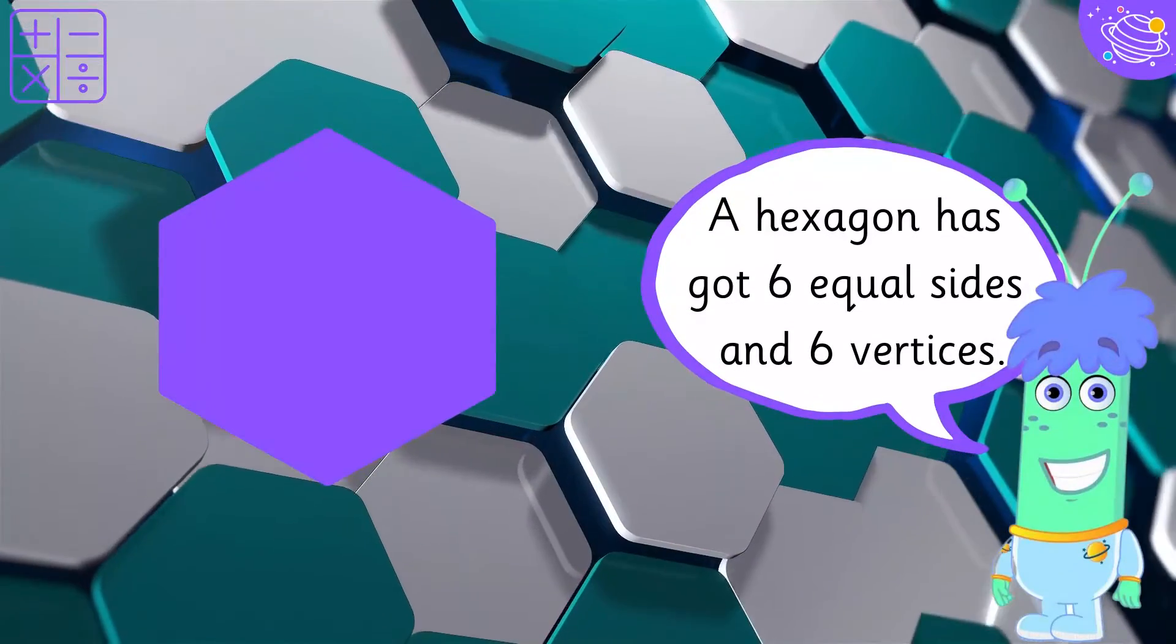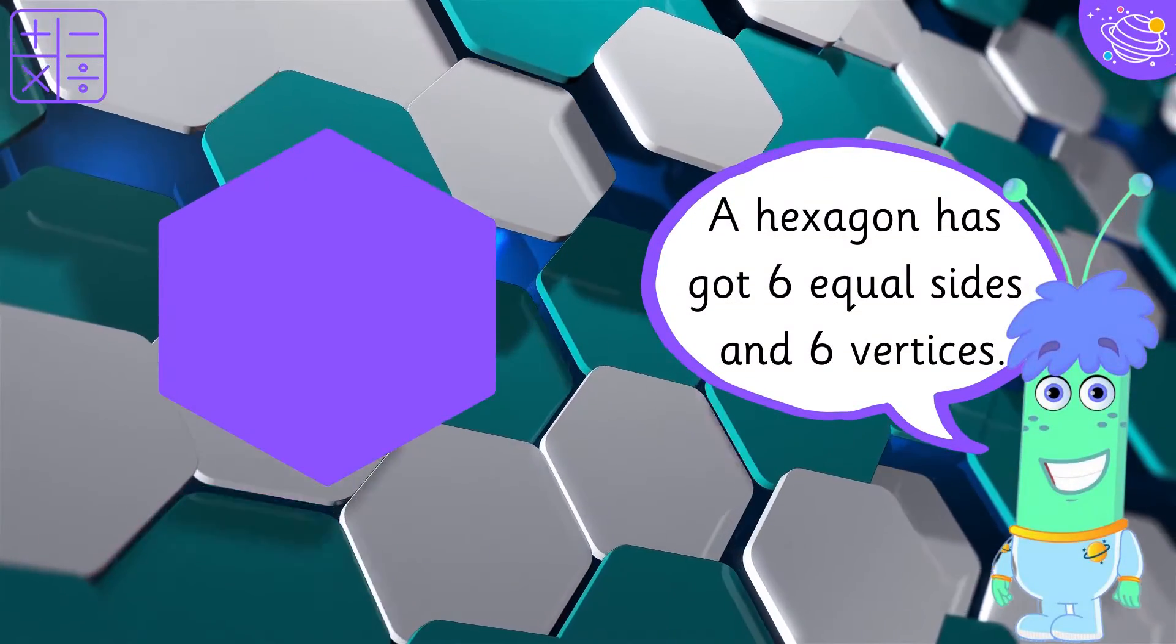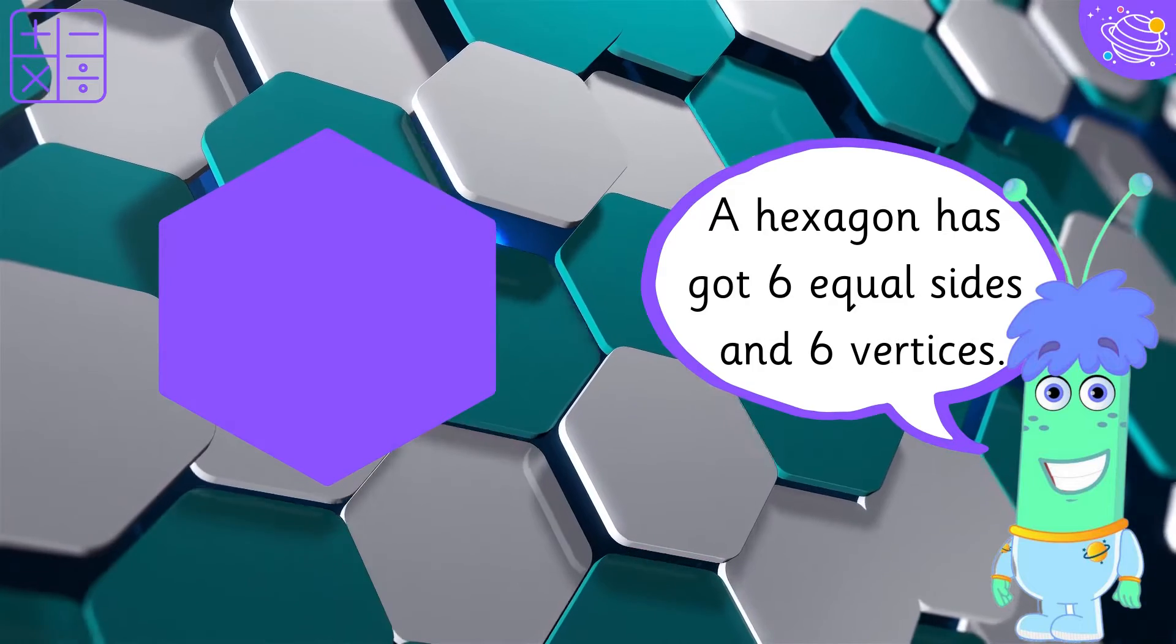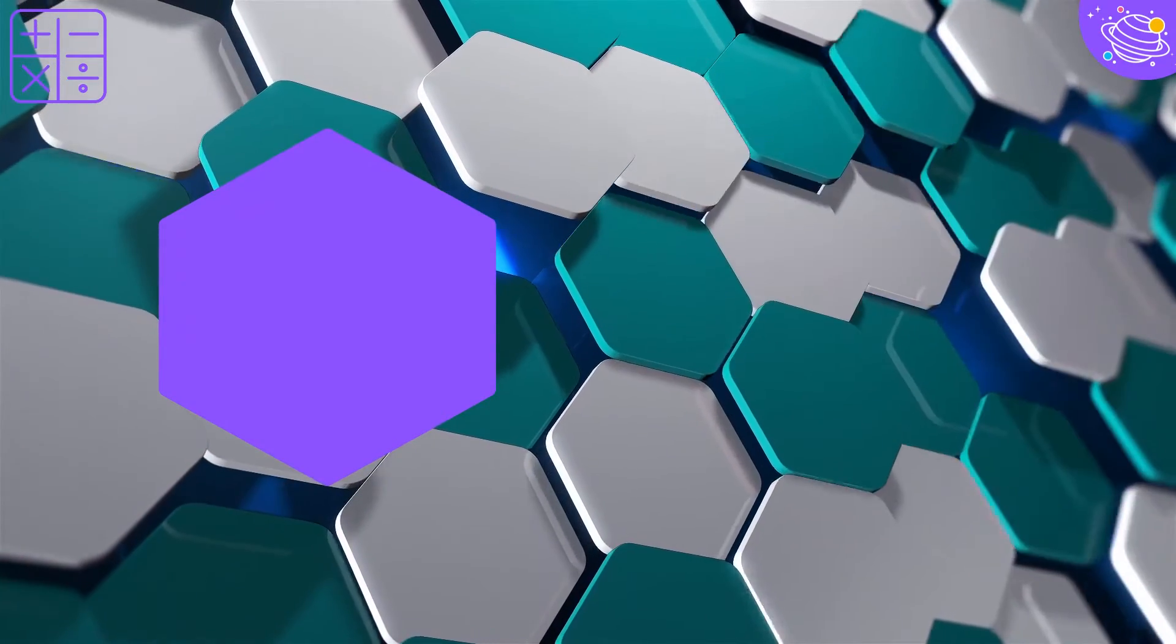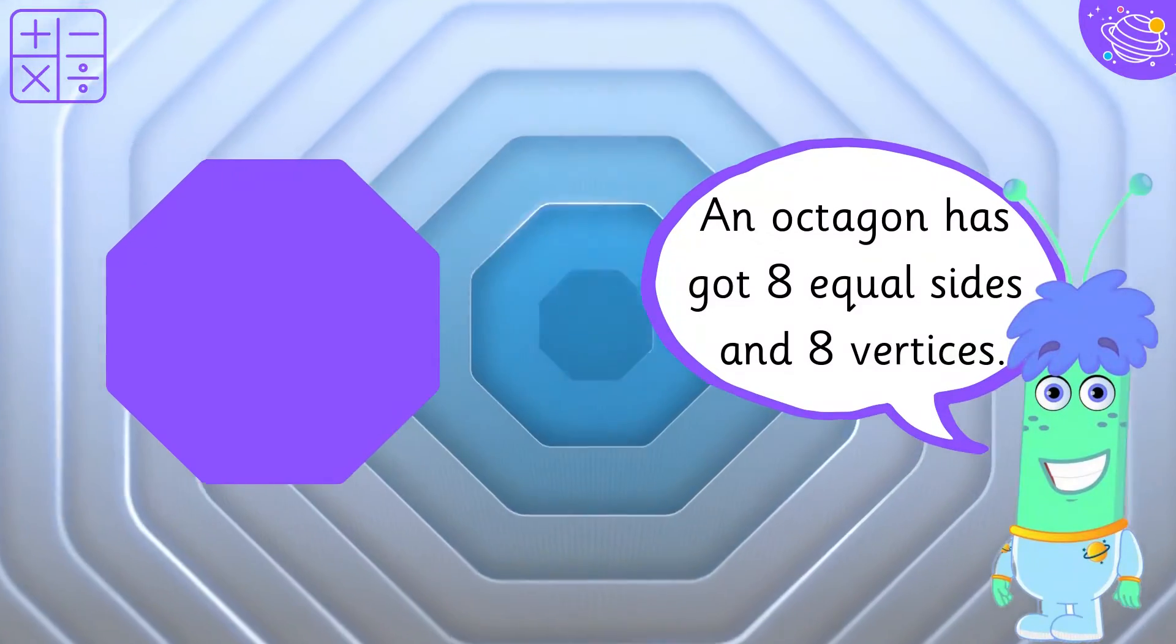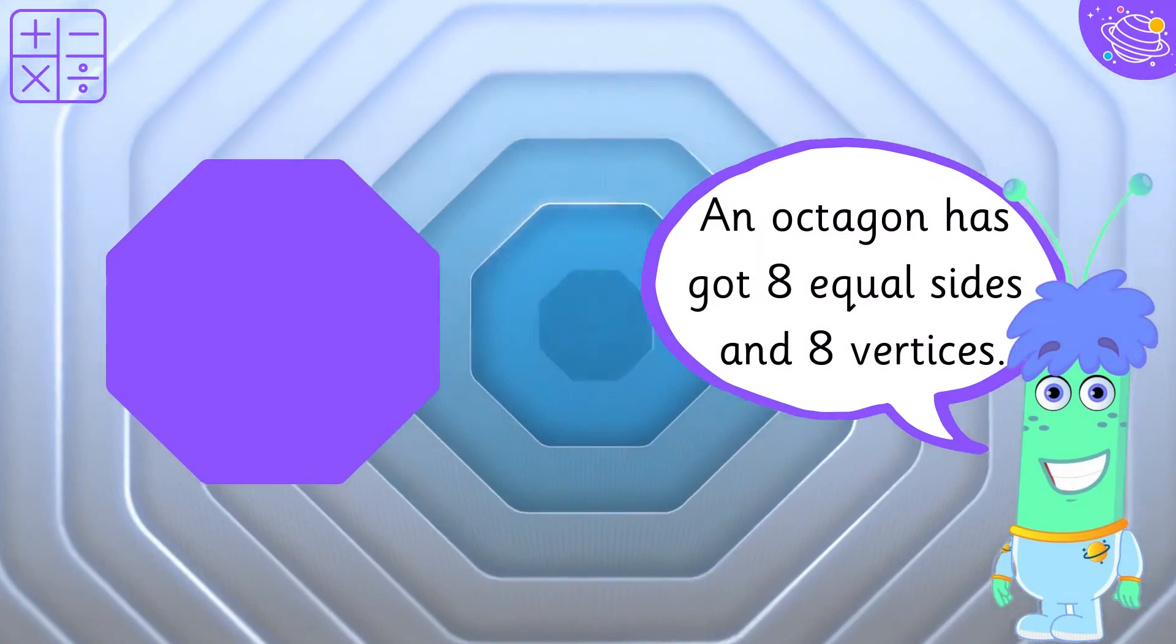A hexagon has got 6 equal sides and 6 vertices. An octagon has got 8 equal sides and 8 vertices.